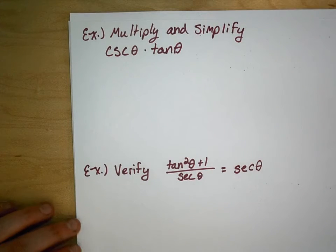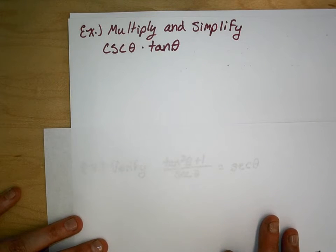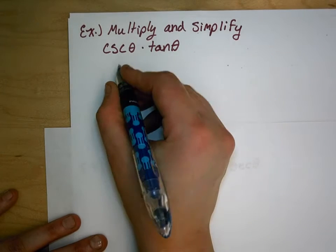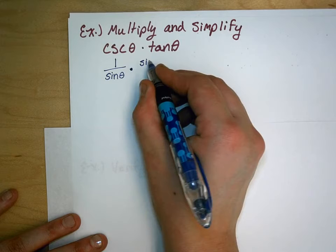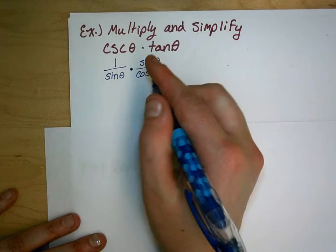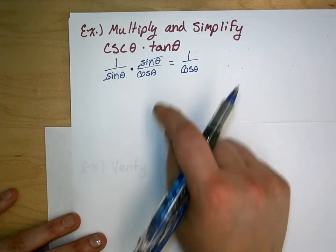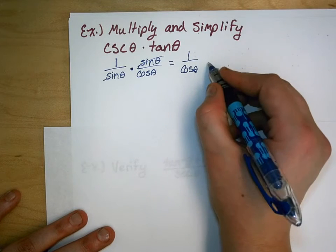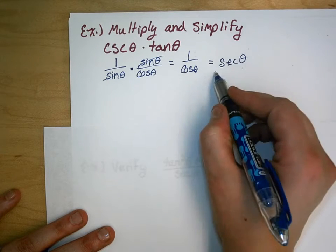Let's move on. We're asked to multiply and simplify cosecant times tangent. I don't see any 1's, so I'm probably not going to use the Pythagorean identity — I'll go ahead and rewrite them in terms of sine and cosine. Cosecant turns into 1 over sine theta, and tangent turns into sine theta over cosine theta. I can cancel out the sine terms because we're multiplying, and that gives me 1 over cosine theta. Let's go ahead and turn that into secant using the reciprocal identity, and that would be our answer.